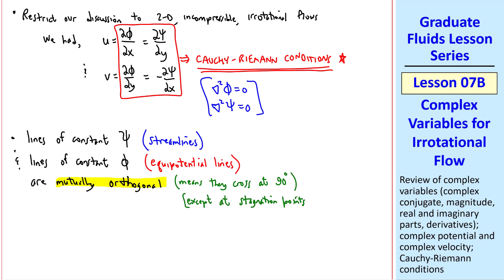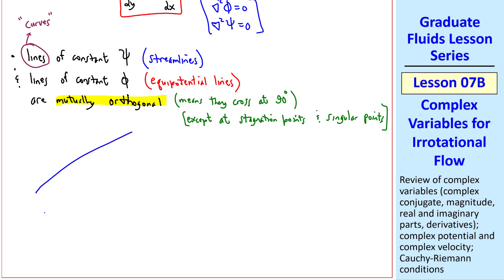There are exceptions, such as stagnation points and singular points. By the way, when we say lines, we really mean curves, but we don't say stream curves or equipotential curves. I'll always use blue for my streamlines, so this might be psi 1, psi 2, and psi 3, and I'll use dashed red lines for the equipotential lines, phi 1, phi 2, and phi 3.